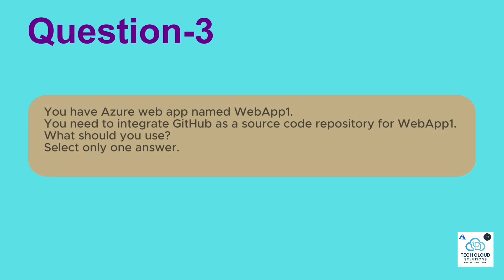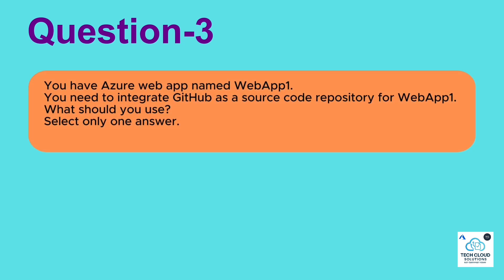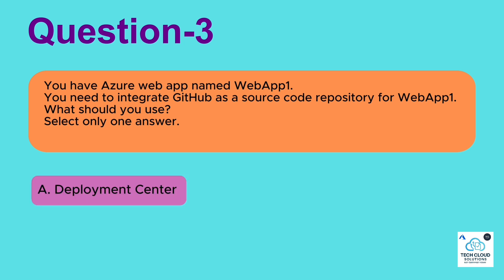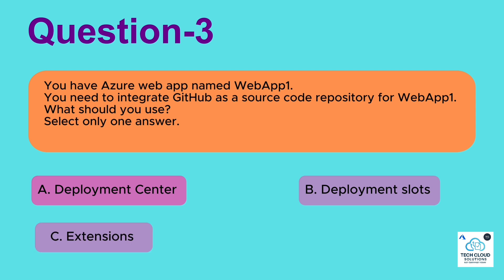Question 3: You have an Azure Web App named Web App 1. You need to integrate GitHub as a source code repository for Web App 1. What should you use? Select only one answer. A. Deployment Center. B. Deployment Slots. C. Extensions. D. Service Connector.